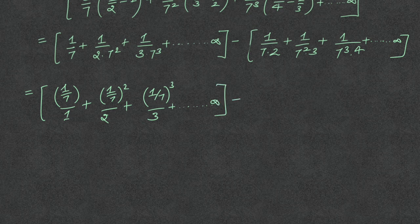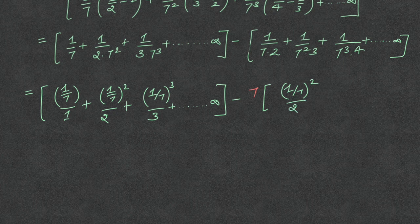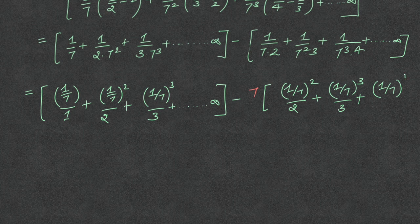Now doing a manipulation: I multiply and divide by 7 inside the bracket — 7 outside and 1 upon 7 squared over 2, plus 1 upon 7 cubed over 3, plus 1 upon 7 to the power 4 over 4, and so on up to infinity.